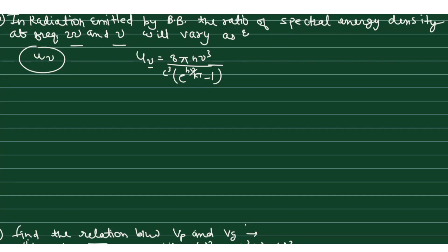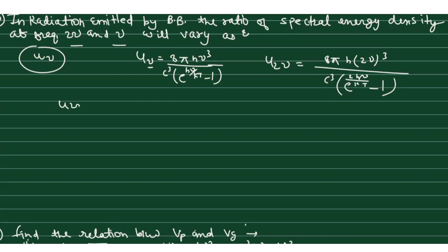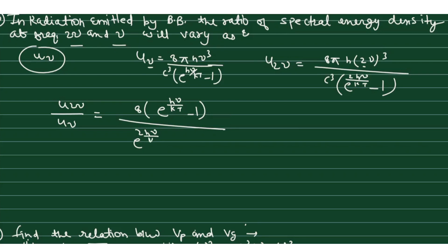We use the Planck energy density formula for frequency 2ν: u(2ν) = 8πh(2ν)³/c³ · 1/(e^(2hν/kT) − 1). When we divide u(2ν) by u(ν), the 8πh/c³ factors cancel. We get 8 · (e^(hν/kT) − 1) / (e^(2hν/kT) − 1), after accounting for the (2ν)³ = 8ν³ factor in the numerator.